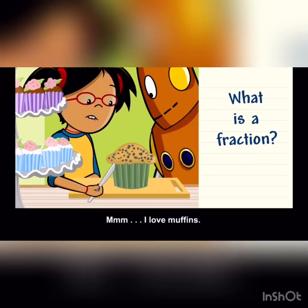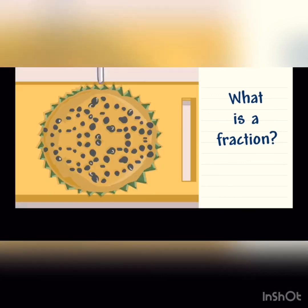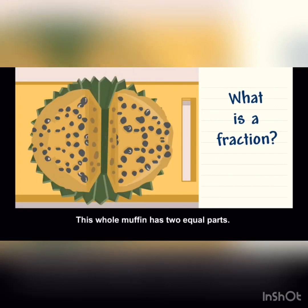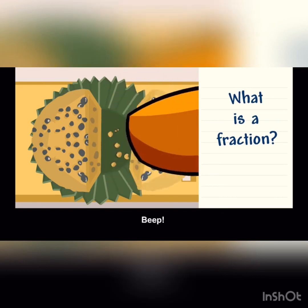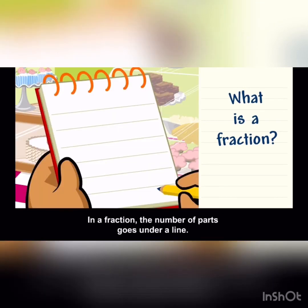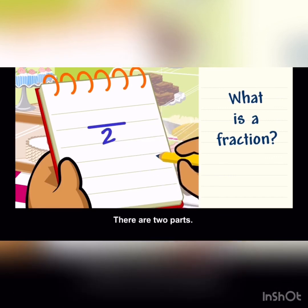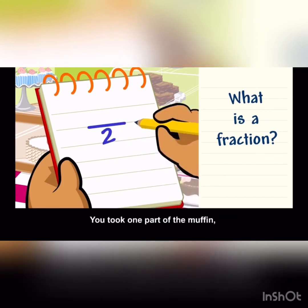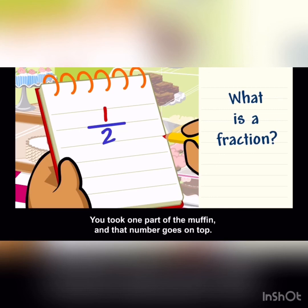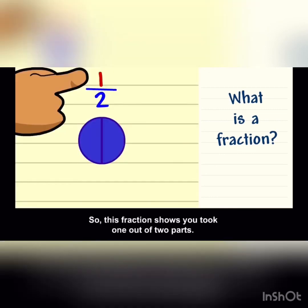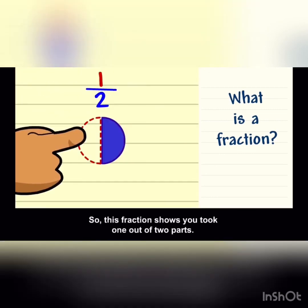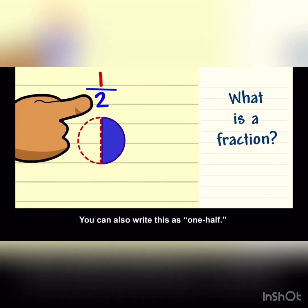I love muffins. This whole muffin has two equal parts. In a fraction, the number of parts goes under a line. There are two parts. You took one part of the muffin and that number goes on top. So this fraction shows you took one out of two parts.